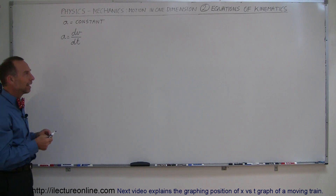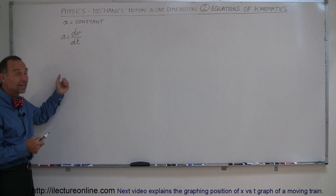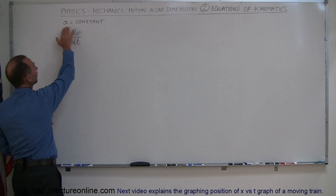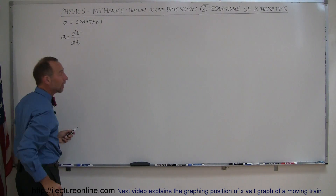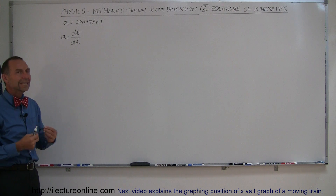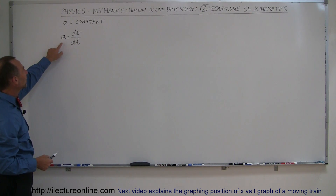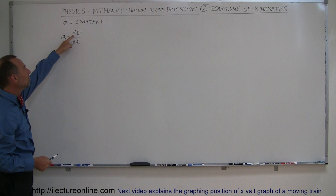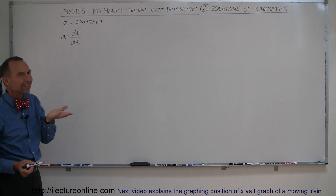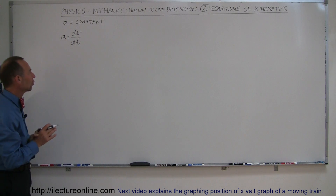The equations are important, and for those who've seen some calculus before, you can see how we're going to derive them. We start with two premises: first, that the acceleration will be constant, which makes for an easier set of equations. Second, that acceleration can be defined as the change in velocity over time — dv/dt, which is essentially the same as Δv/Δt.